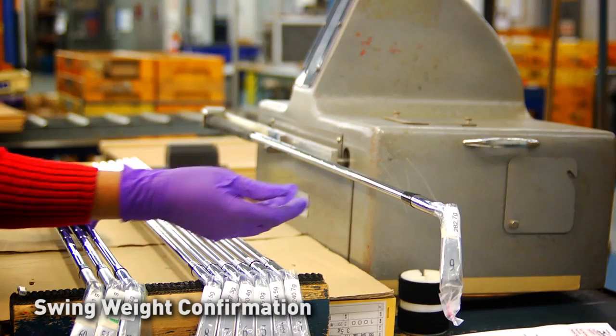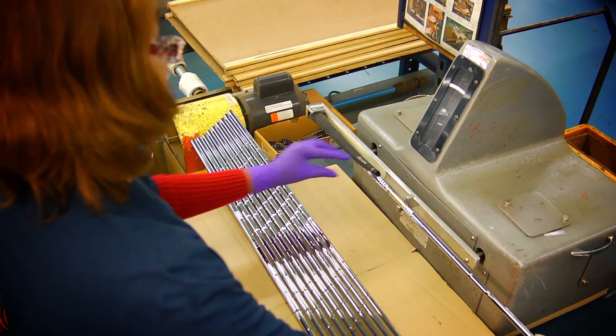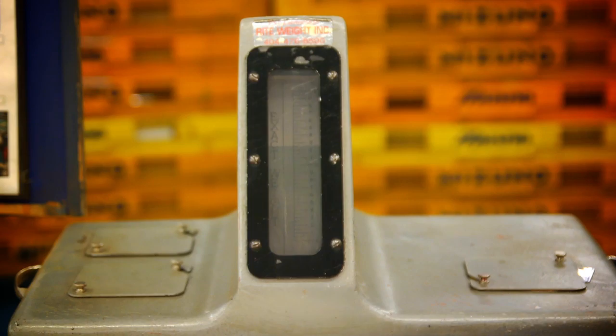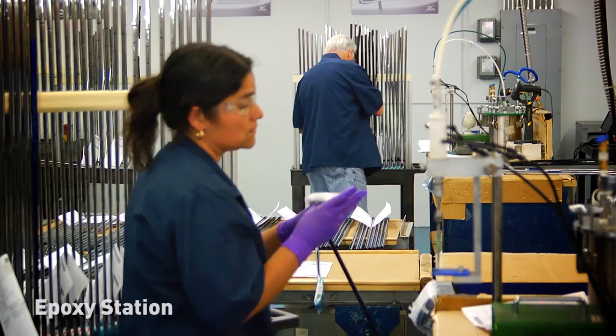The next step is to dial in your correct swing weight. To do this, we construct a non-epoxied version of your exact club, all the way down to your specific grip selection, and utilize a tool called a shadow graph to verify what the swing weight will be after the head and shaft are epoxied together. Once we confirm that your swing weight is right on target...